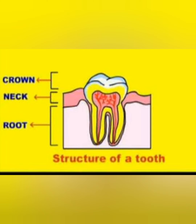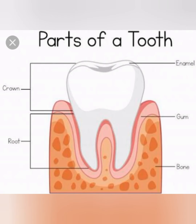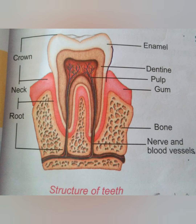The next layer is called dentine. Dentine is like a bone. The soft material inside the dentine is called pulp. There are nerves and blood vessels in the pulp. These nerves are connected to the gums through a hole in the root of the tooth.